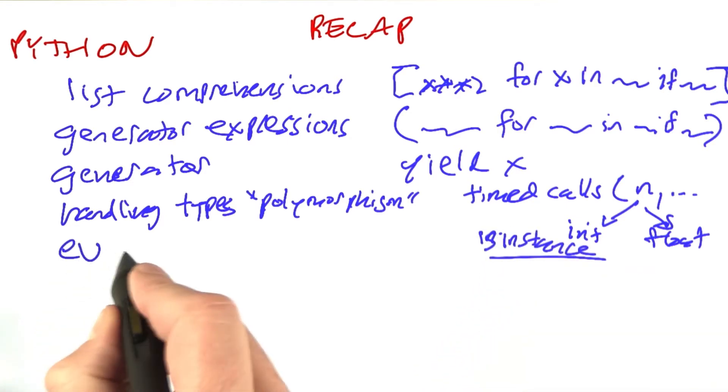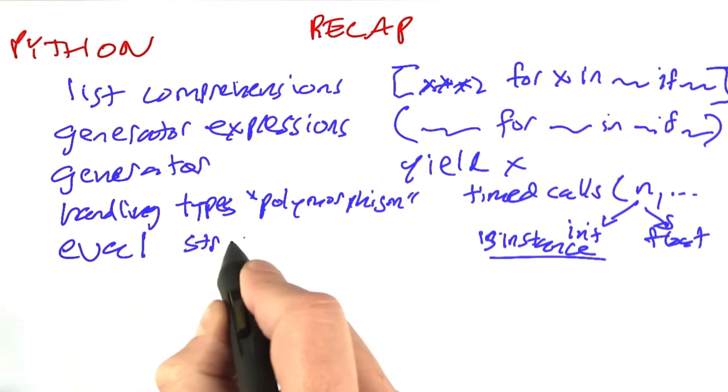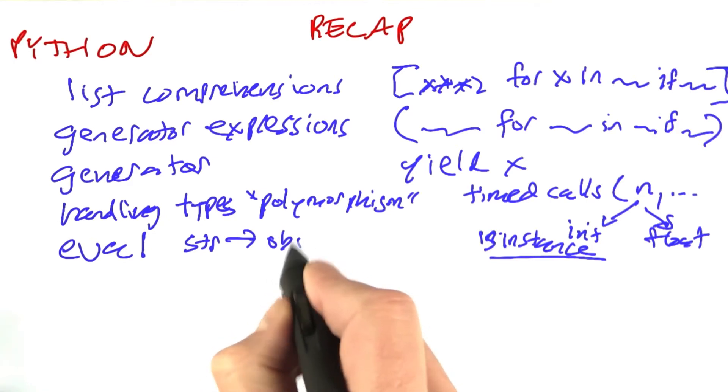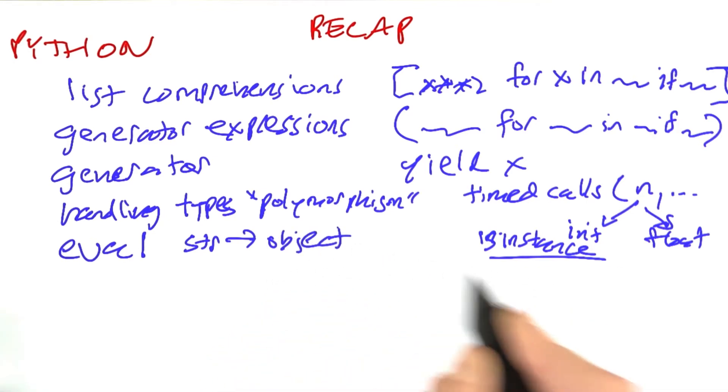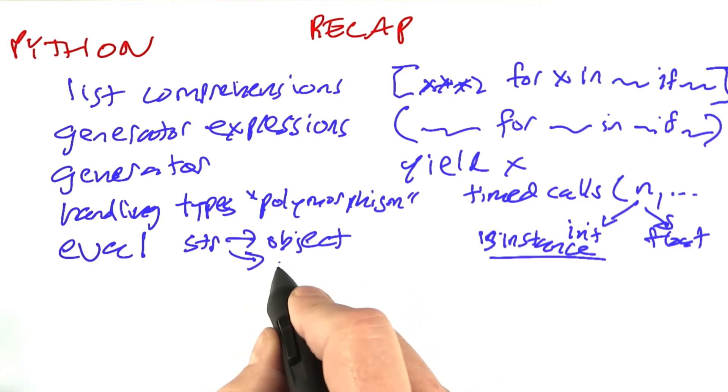We talked about the eval function and how we can use that to map from a string to a Python object, which is the result of evaluating the string, and in particular the case of evaluating to a function. Eval is a way of making that computation be done once and getting all that work over with so that we can then use that work repeatedly.